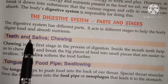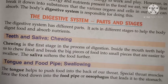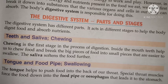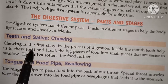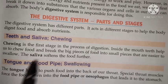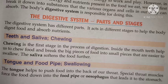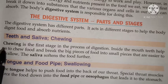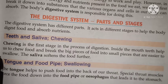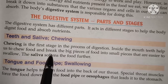Next is teeth and saliva — chewing first. Hum digestive system ke different parts ke baare mein padenge. Pehle aa rahe hain teeth and saliva — chewing. Chewing is the first stage in the process of digestion. Digestion ka jo first stage hai, woh kya hai? Chewing hai — chewing means 'chabana'.